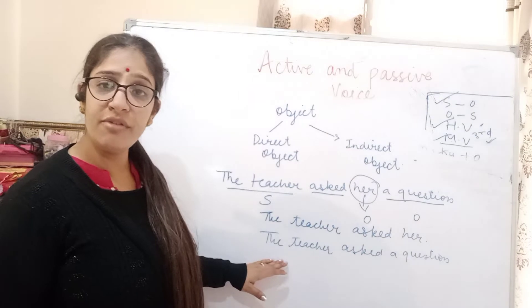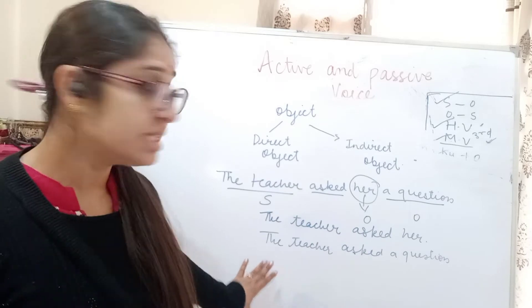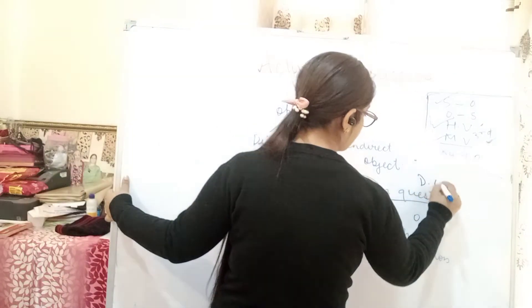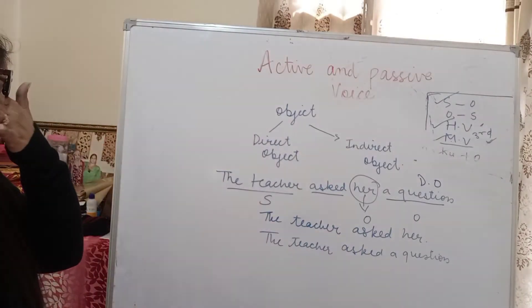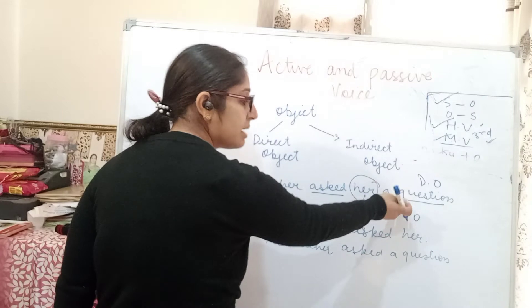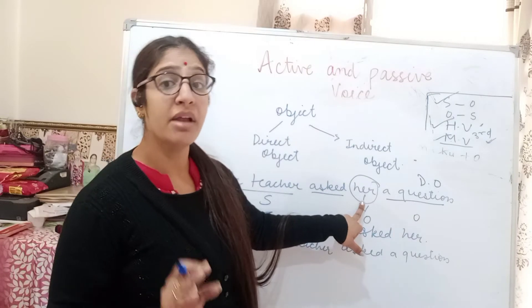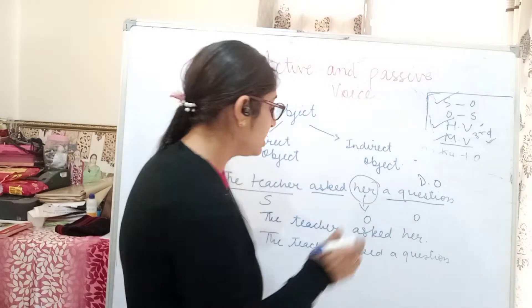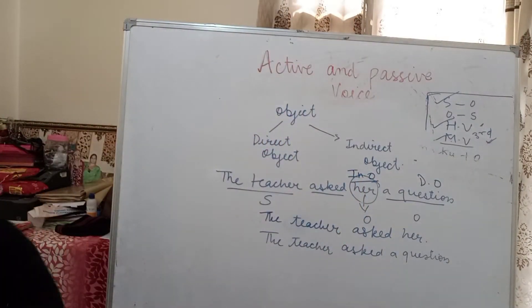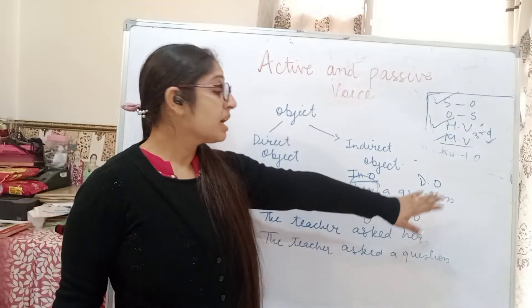Here in this sentence, you are getting complete information if I write: 'The teacher asks a question.' So that sentence is complete on its own. This helps us understand which is the direct and indirect object — the object which completes the sentence's meaning on its own is the direct object.